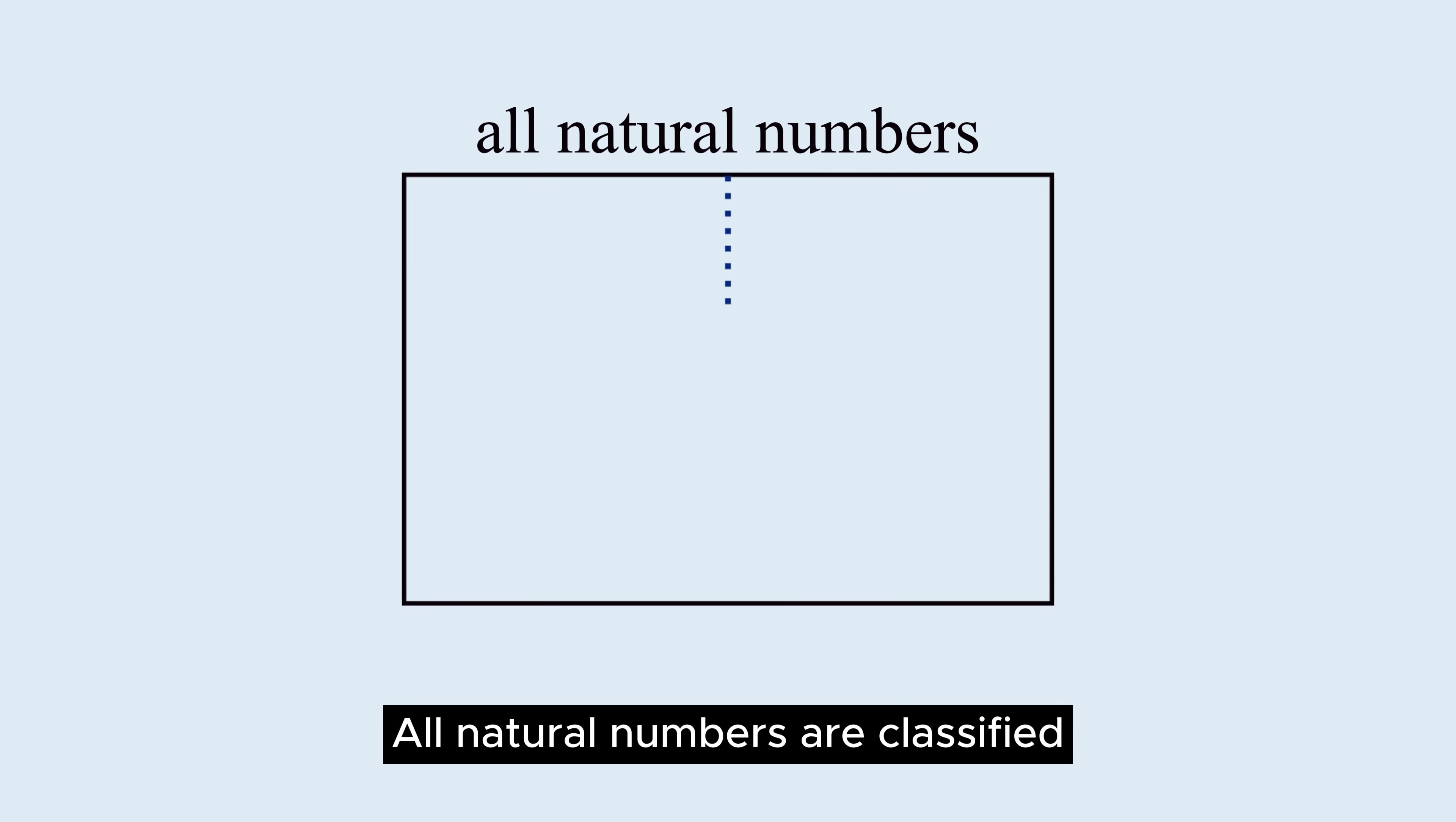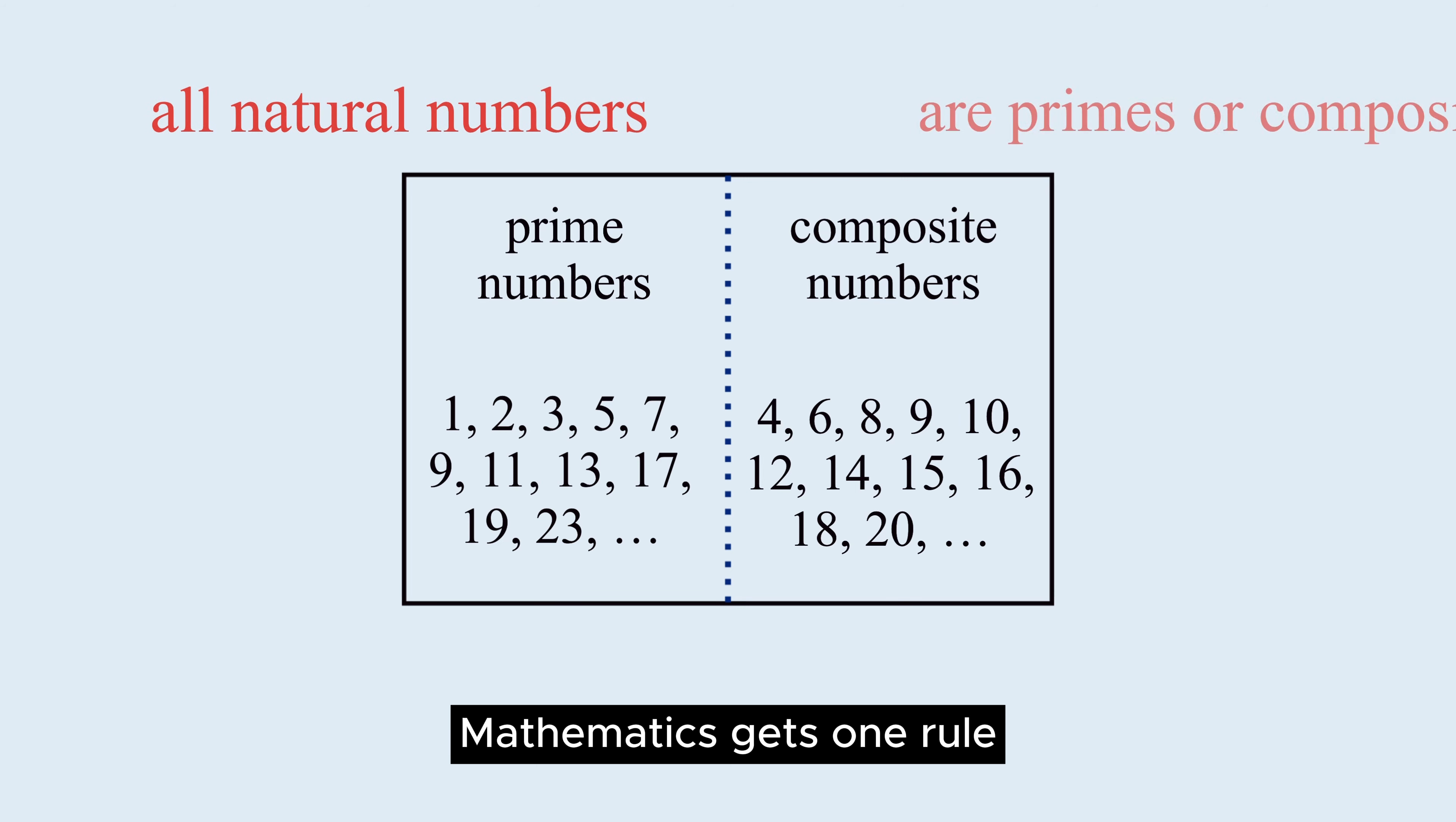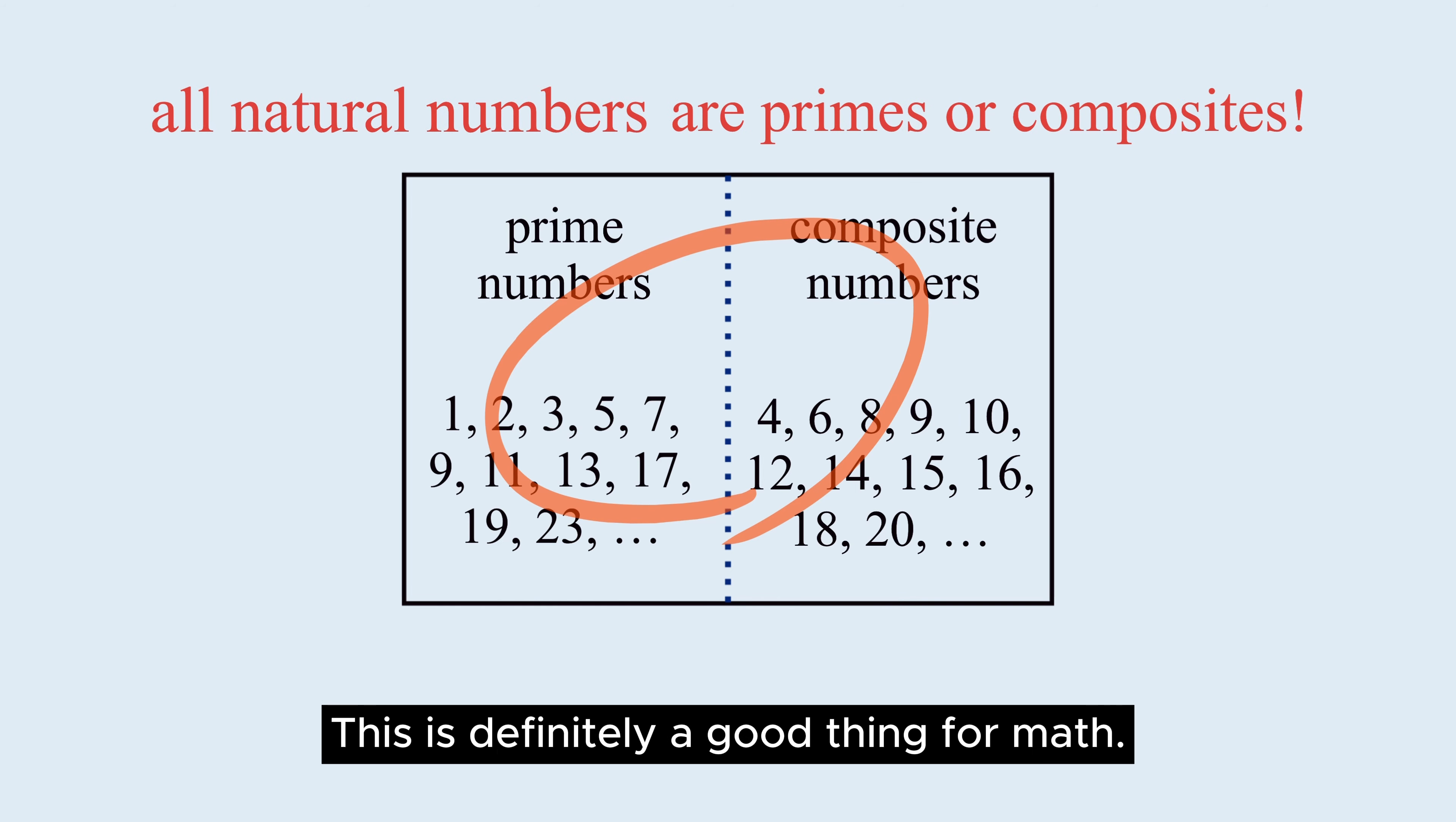All natural numbers are classified as prime or composite numbers. There is no natural number excluded from that classification. Mathematics gets one rule that applies to all natural numbers. This is definitely a good thing for math.